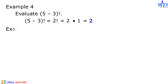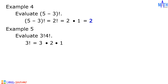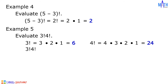Example number 5: evaluate 3 factorial times 4 factorial. 3 factorial is equal to 3 times 2 times 1, which is equal to 6. 4 factorial is equal to 4 times 3 times 2 times 1, which is equal to 24. Therefore, 3 factorial times 4 factorial is equal to 6 times 24, which is equal to 144.